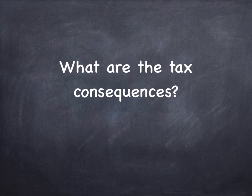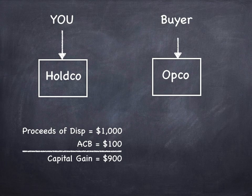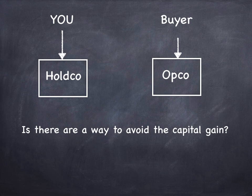Well, if you sell it for what it's worth, the proceeds of disposition are $1,000, and your ACB was $100. That gives you a capital gain of $900. But is there a way possibly to avoid the capital gain?